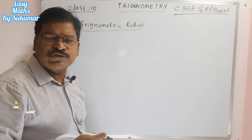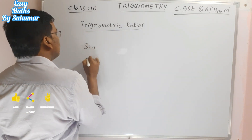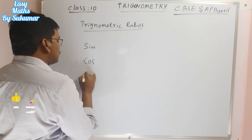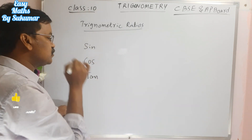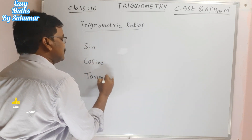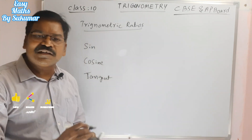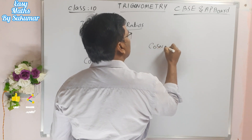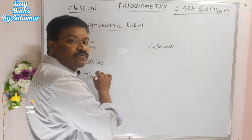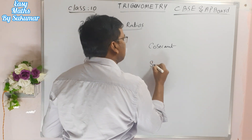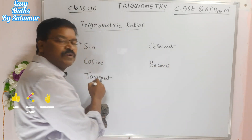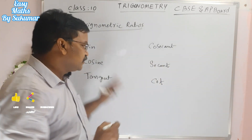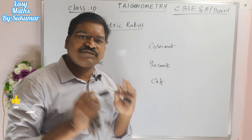The three trigonometric ratios are: sine, cosine (or cos), and tangent (or tan). Their reciprocals are cosecant, secant, and cotangent (cot). So in total there are six trigonometric ratios — three plus three.